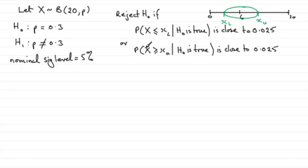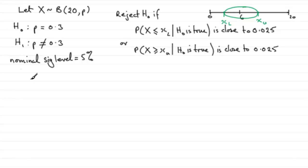We also look at the probability of X being greater than or equal to the upper critical value XU, given H0 is true. We want that probability to also be as close as we can get to 0.025.